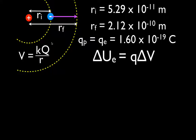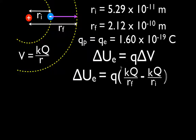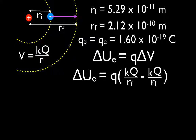So all I'm going to do is take the V = KQ/r term and substitute it in for the change in potential. We get that the change in potential energy equals the amount of charge — the electron we're moving — times the change in potential, which is the final potential minus the initial potential. Remember, the change is always final minus initial. So we have K·Q/rf minus K·Q/ri.